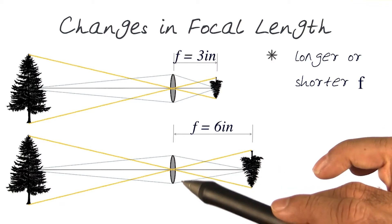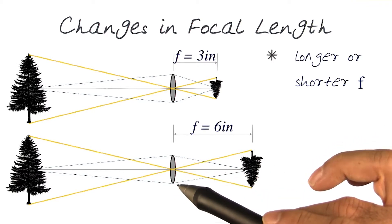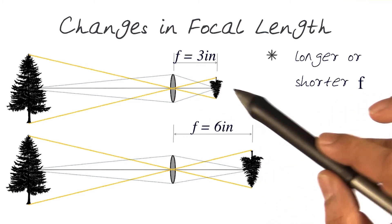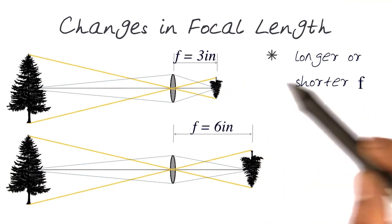Most times, the focal length f could be longer or shorter, and we will see examples of the impact of this on what kinds of images are formed in a bit.